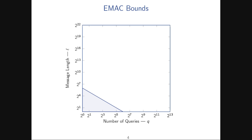Plotting this bound with a 32-bit block size and confidence level of 1 in a million: the horizontal axis is the number of adversary queries, the vertical axis is message length (log-log scale). If messages are about 2 to the 6 blocks long and you want to make two queries, you're already in the insecure zone according to this bound. If you're making 2 to the 6 queries, you're right at the edge. This is quite a serious restriction with a 32-bit block cipher.